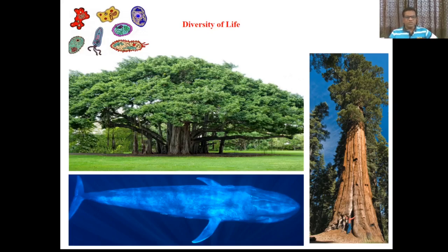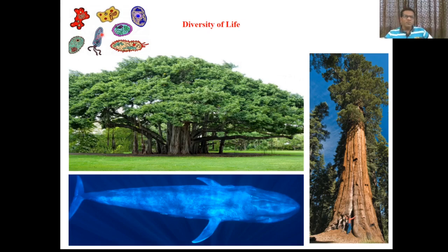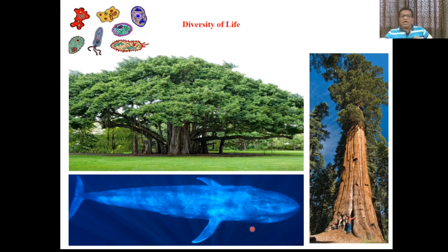This figure shows the diversity. We have taken only few organisms here. At one corner you see organisms like bacteria, amoeba, paramecium - all these are unicellular organisms, microscopic organisms, either prokaryotic or eukaryotic. We have to measure them in millimicrons or micrometers, nanometers. And at the same time you can see this banyan tree, or this sequoia plant, or the blue whale.